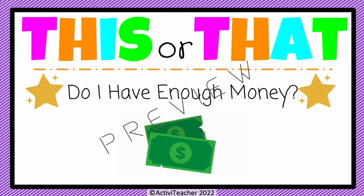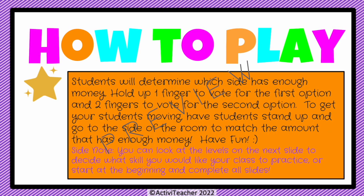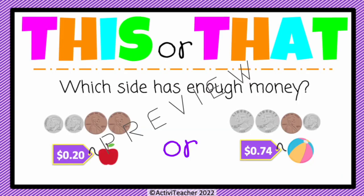I have two more activities for you. This is a 'This or That: Do I Have Enough Money?' game. Students determine which side has enough money — you can have your students get out of their seats and go to the side of the room that matches the amount that has enough money. This game is also leveled, so you can pick out the slides that best meet your students' needs across three levels.